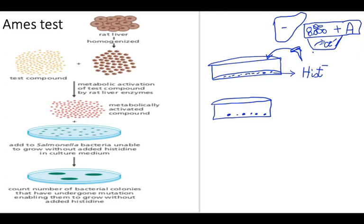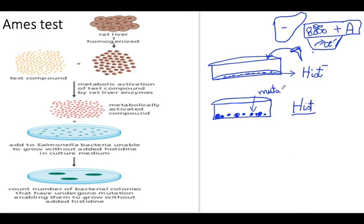If you find quite a few colonies, you say that compound A has mutagenic potential. Why? Because it caused a certain DNA change in those bacteria. Those histidine-lacking bacteria were exposed to the metabolically active compound, and not only did they survive, they actually grew and formed colonies — meaning they regained the ability to produce histidine. This is due to a mutation introduced by the active metabolite generated by the liver enzymes. That is what an Ames test is.